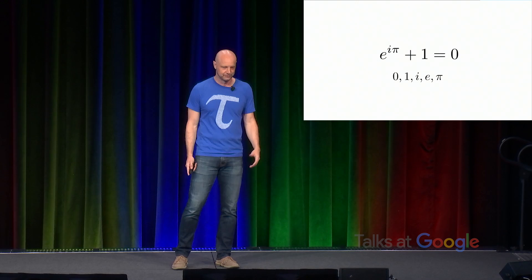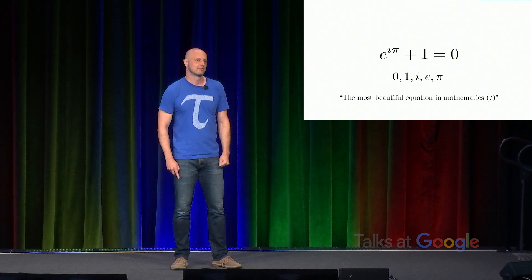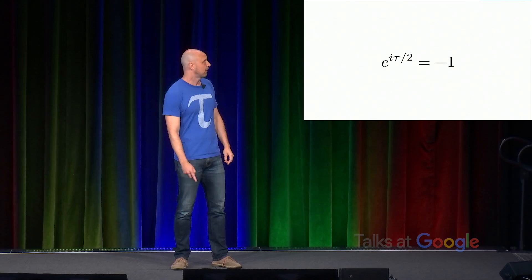But is this really the most beautiful equation in mathematics? I mean, I don't know. There's a negative sign. We had to rearrange it. What's really going on here? Well, we can find out by rewriting Euler's identity traditional form in terms of tau. It's e to the i tau over two equals negative one. No rearrangement. What's going on here?